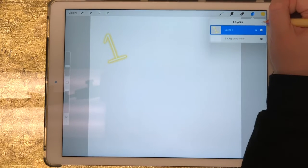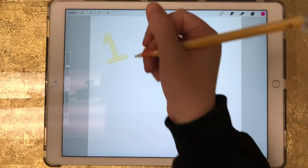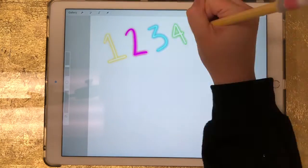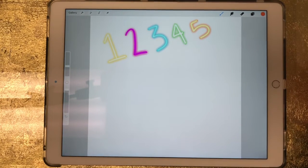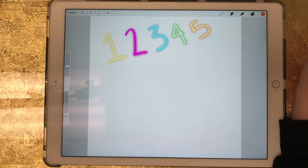And now I'm going to create a new layer by going to my layers and clicking the plus sign, and I'm going to write two. So anyway, now I've got five layers.